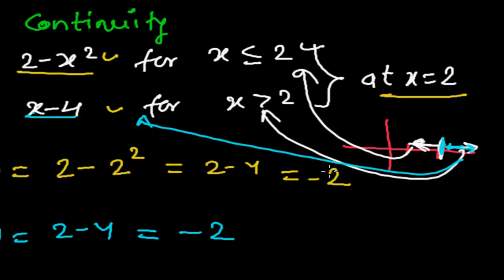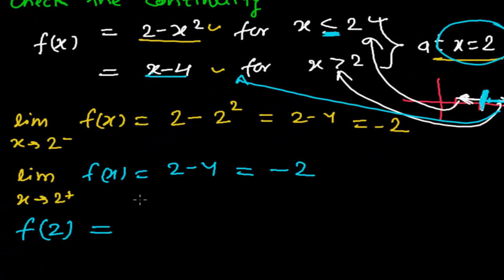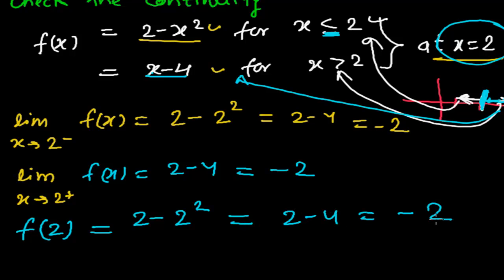Now we need to find the value of the function at x equals 2. Since x equals 2 satisfies the condition x less than or equal to 2, we use f(x) equals 2 minus x squared. Substituting x equals 2: 2 minus 2 squared equals 2 minus 4, which is minus 2.